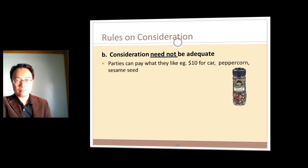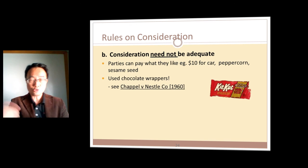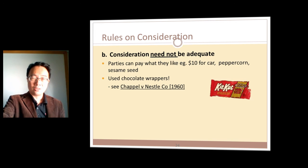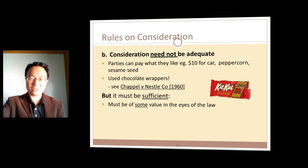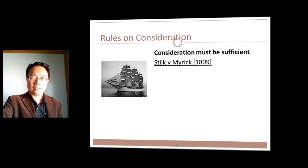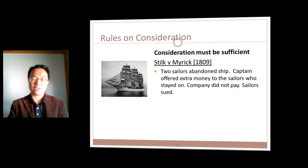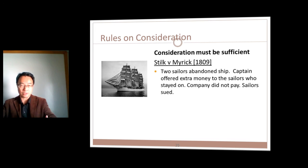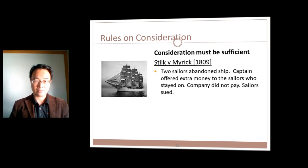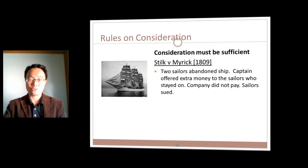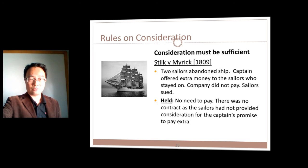Consideration may not be adequate — $10 for a car is valid, even one peppercorn or a used chocolate wrapper can serve as consideration, so long as it is real and has some value. However, consideration must be sufficient: if it is something you've already promised to do, you can't use that as your consideration. In the sailor case, sailors already under contract to work on a ship were promised extra money when two crew abandoned ship, but the court said it wasn't binding because they were already obligated to work.